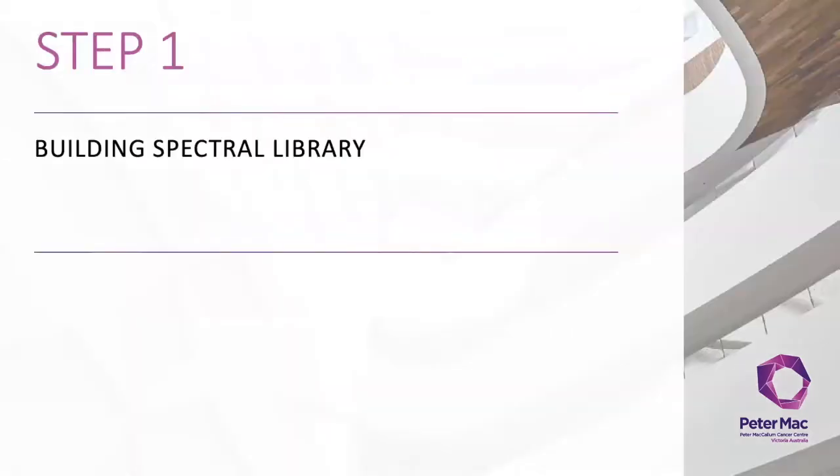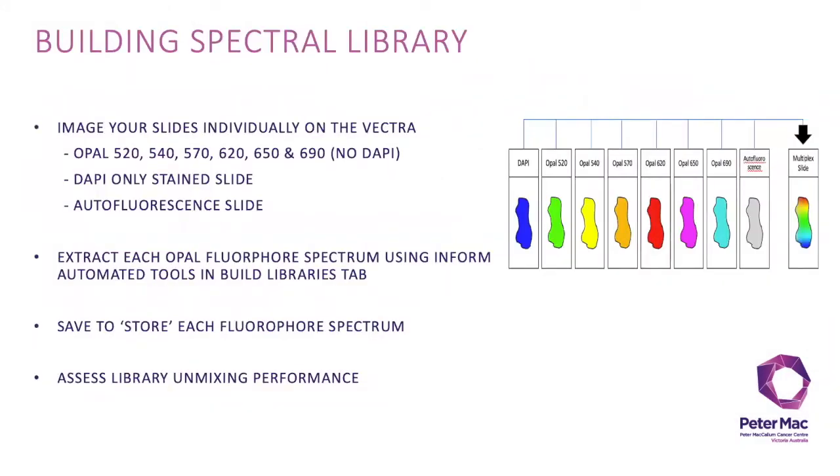The first step in the Vectra 3 imaging workflow is to build your spectral library. You need to acquire two to three images from each of the single opal fluorophore, DAPI and unstained autofluorescence slides that you have previously stained on either the BondRx or manually. Make sure to use all the epifluorescence filters relevant to that opal dye. For example, DAPI should only be present in the DAPI filter therefore all other filters should be set to 150 milliseconds.